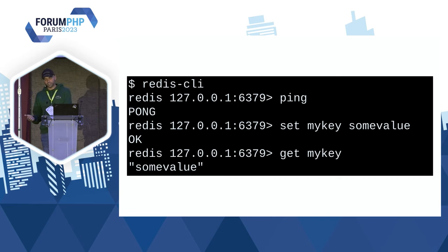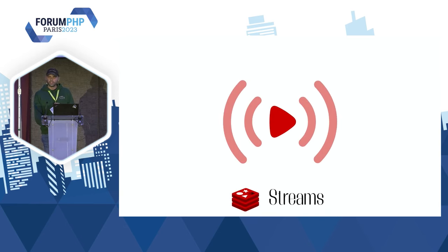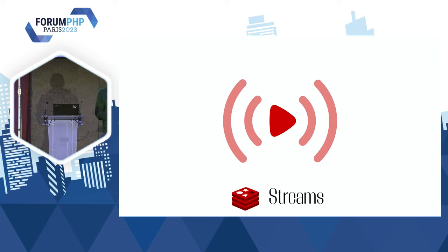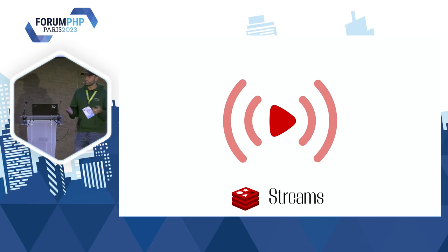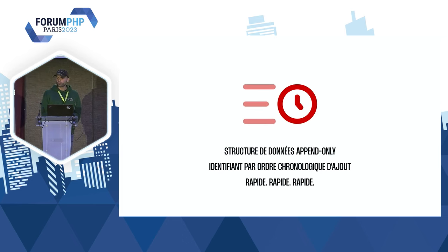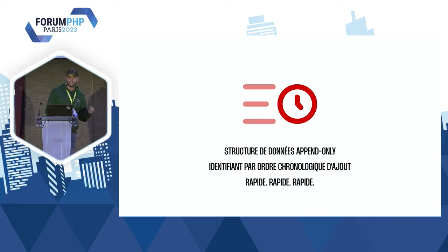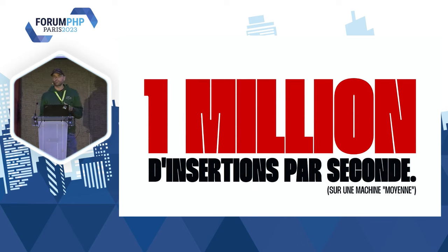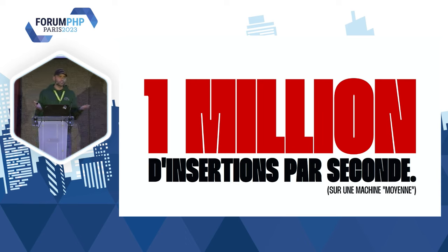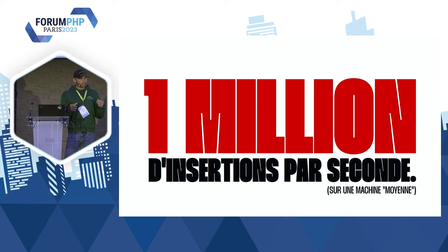C'est à ce moment-là qu'on a découvert les streams dans Redis. Les streams c'est une structure de données ajoutée il n'y a pas très longtemps dans Redis — peut-être 2-3 ans. C'est une structure append-only avec un identifiant pour l'ordre chronologique d'ajout, et c'est rapide. Dans la doc, il est marqué qu'on peut faire à peu près 1 million d'insertions par seconde sur une machine dite « moyenne ». Redis pourrait être notre point d'entrée unique pour tous les pods dans le cloud.